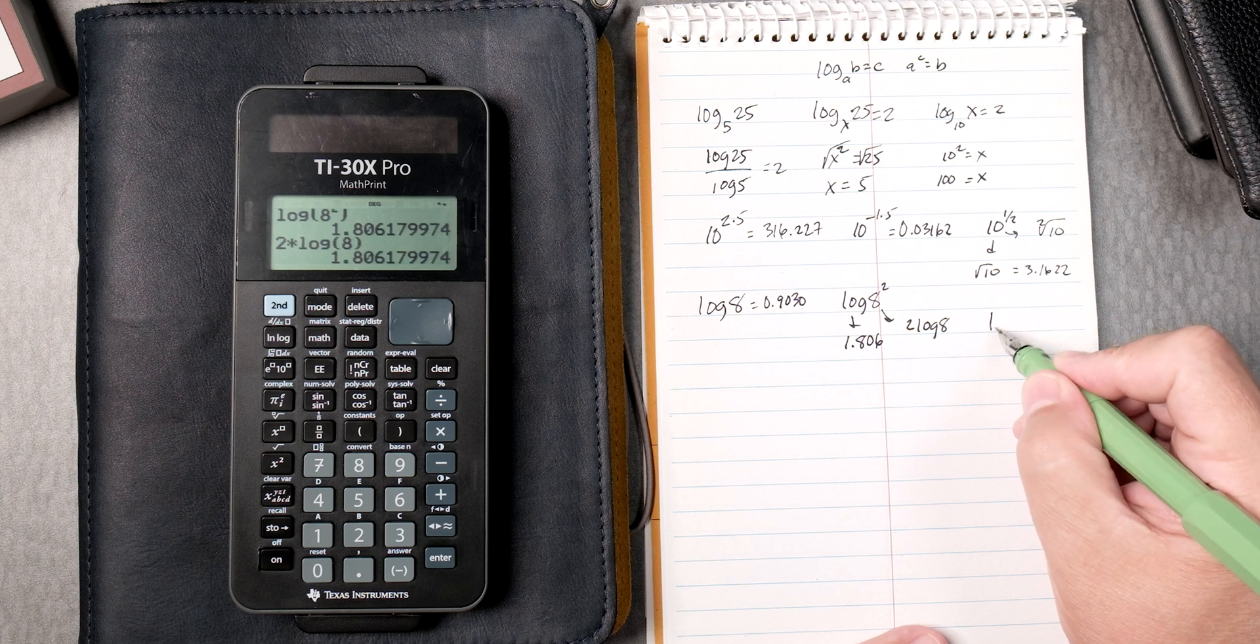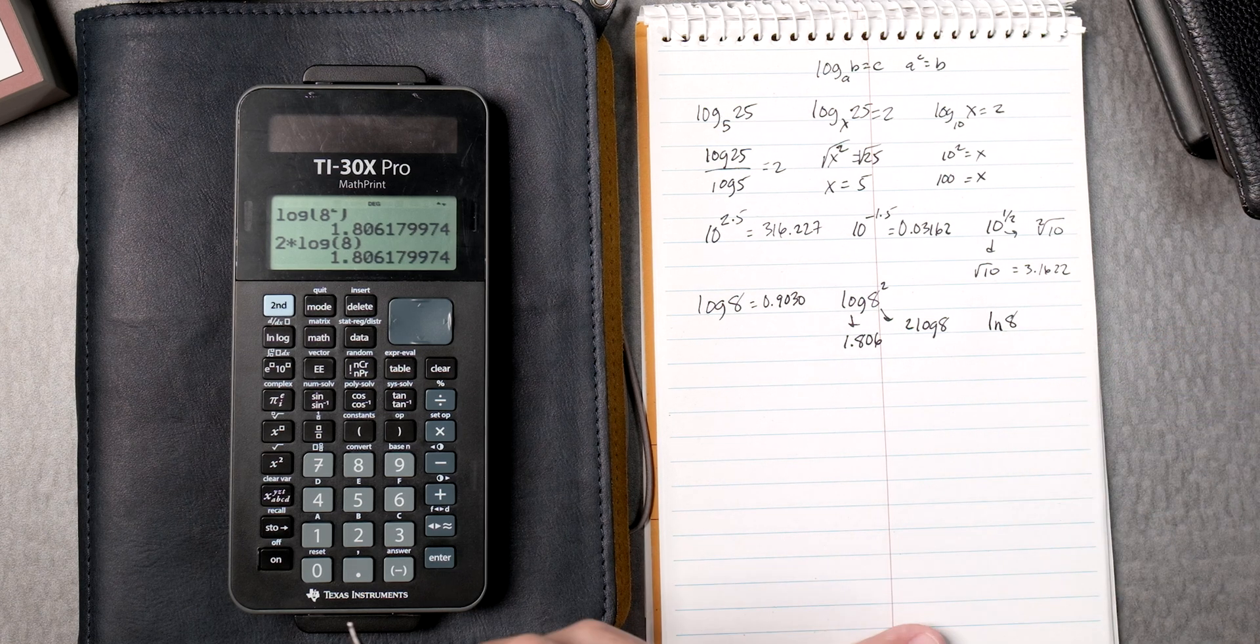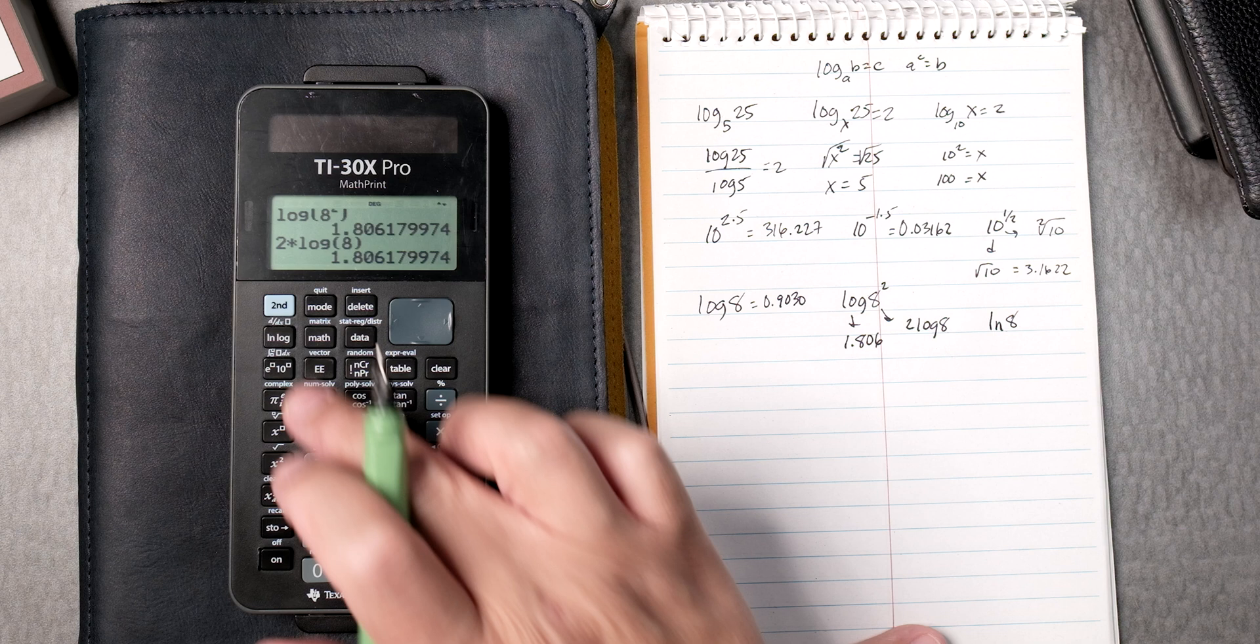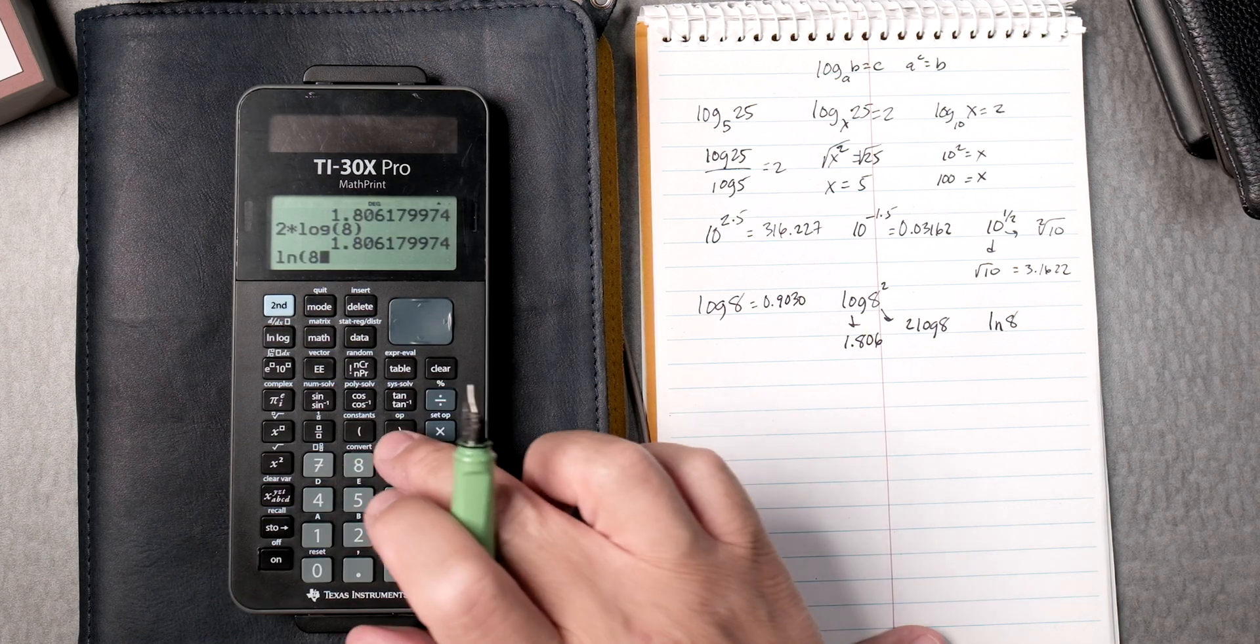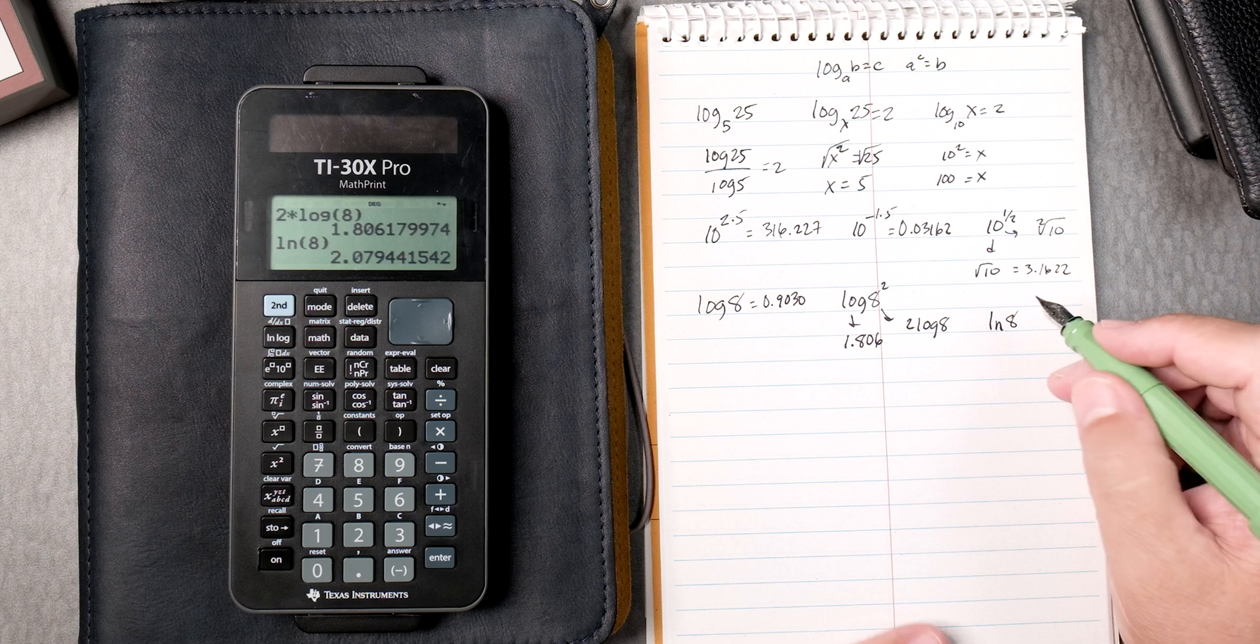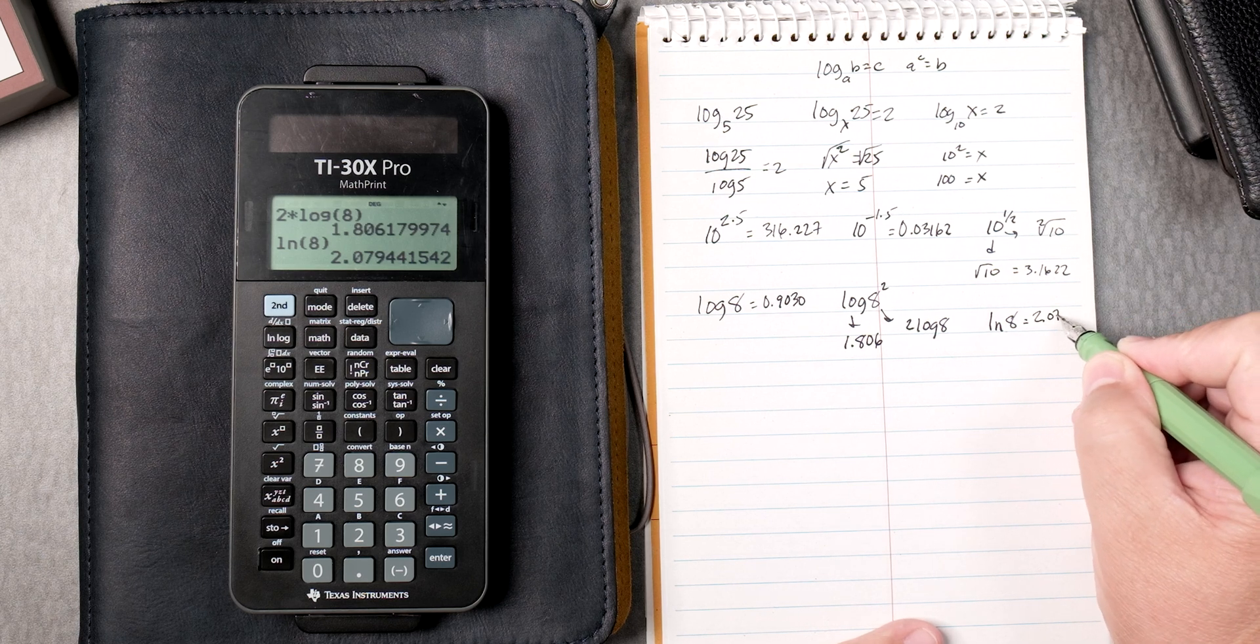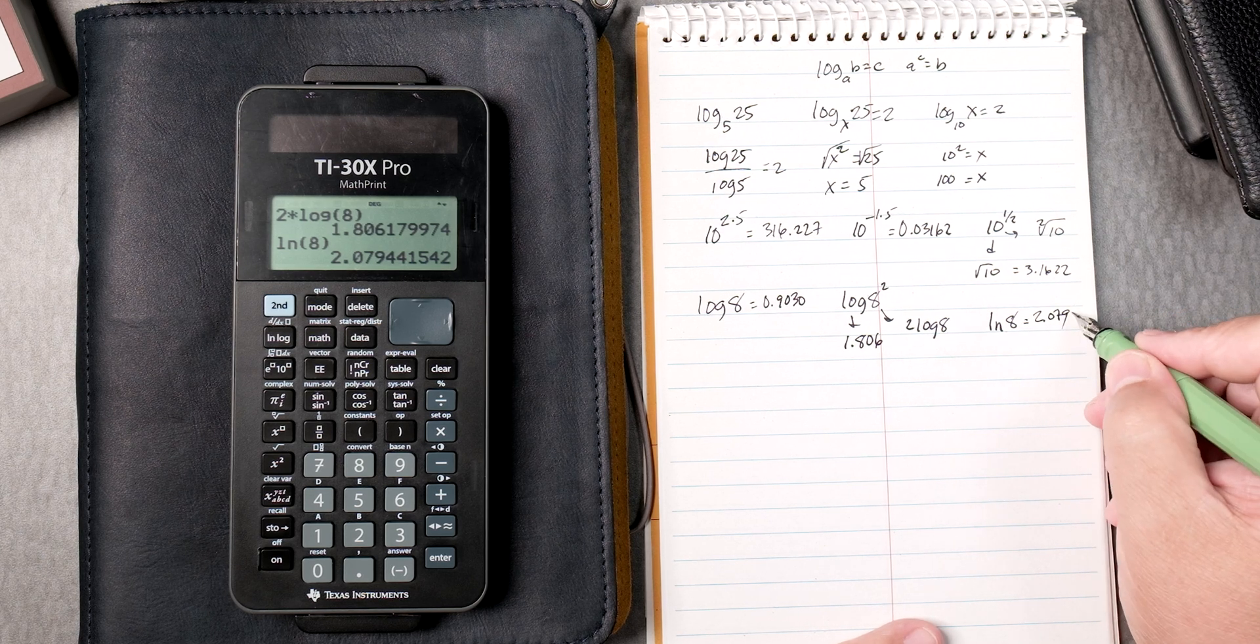Then the natural log of 8. So you press the log key, type in 8, close it, enter. You don't need to close it probably. 2.07994.